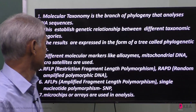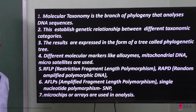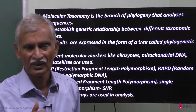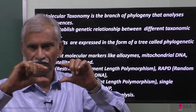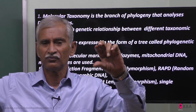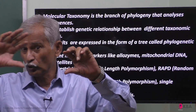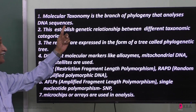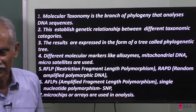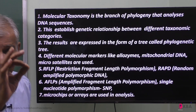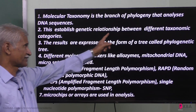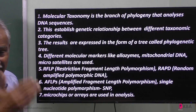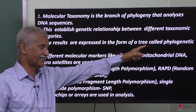The next type of classification is Molecular Taxonomy. In this method, DNA sequences within chromosomes are analyzed. Molecular taxonomy is the branch of phylogeny that analyzes DNA sequences to determine whether there are sequence variations. This establishes genetic and ancestral relationships between different taxonomic categories. The results are expressed in the form of a tree called a phylogenetic tree.